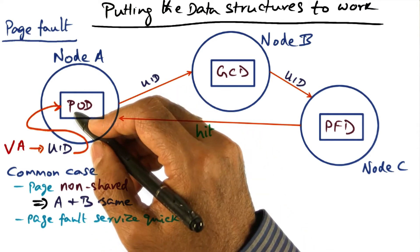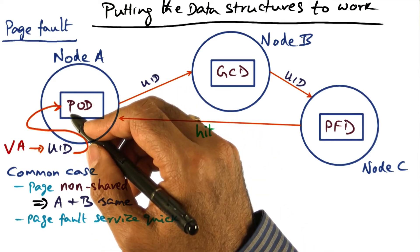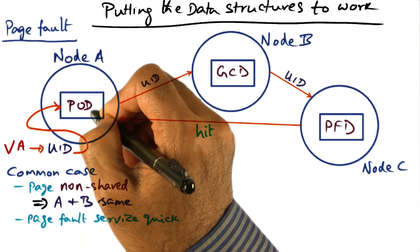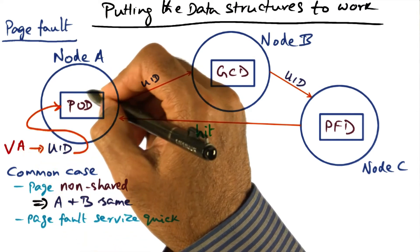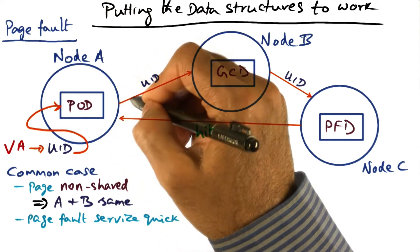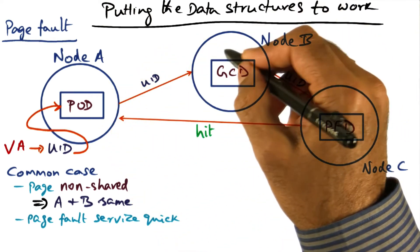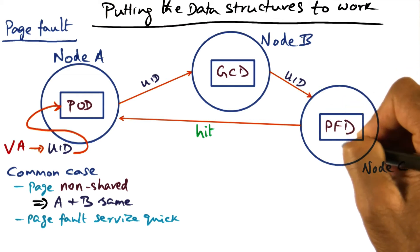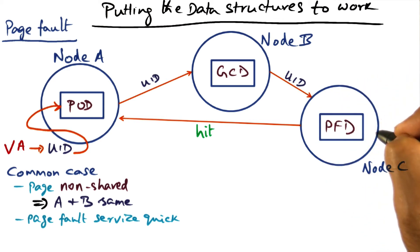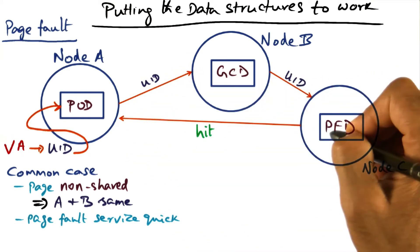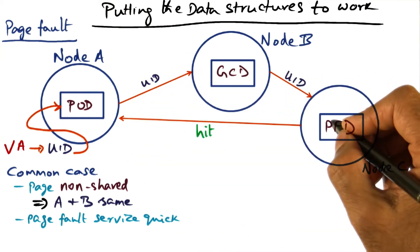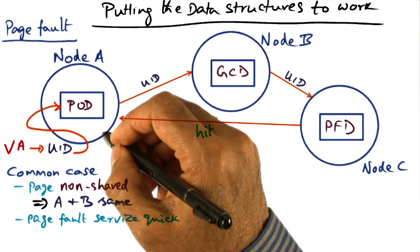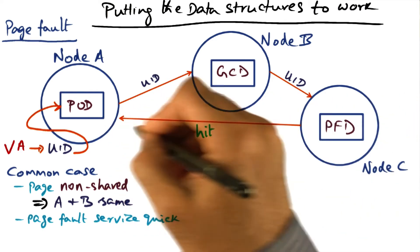So you can see that, potentially, when a page fault happens, there can be three levels of network communication. Of course, the first lookup of the POD is local to my node, because the POD data structure is replicated on every node. So from the UID I can find the owner, but then I have to send a network message to the node that contains the GCD for this UID, and then it sends to the node that has the page so that the page can come back. This network communication is tolerable because it is equivalent to the role a disk would have played, and it is much better than going to a disk to get the missing page.